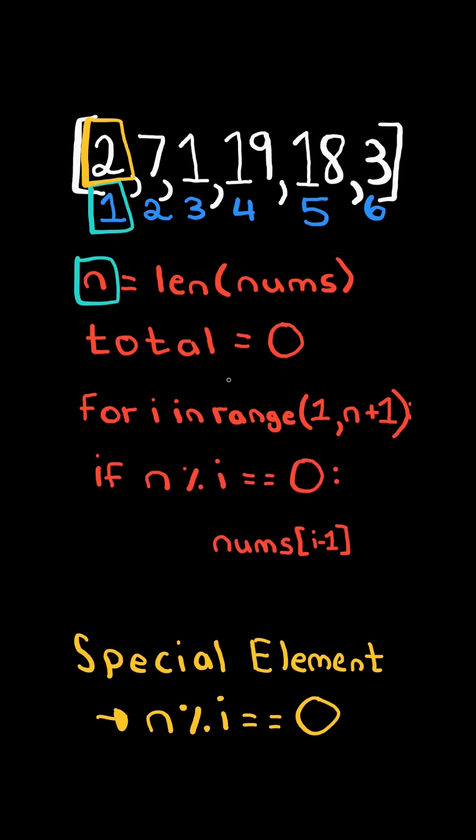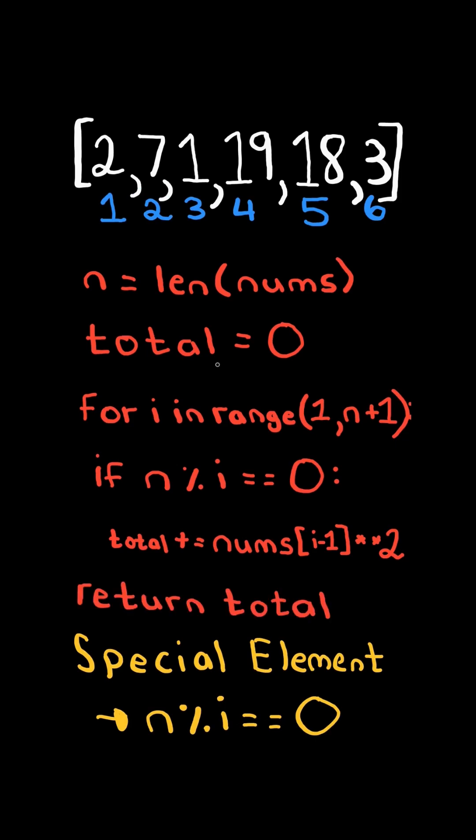we take the number at that index, raise it to the power of 2, and add it to total. And we continue. At the end, we return total.